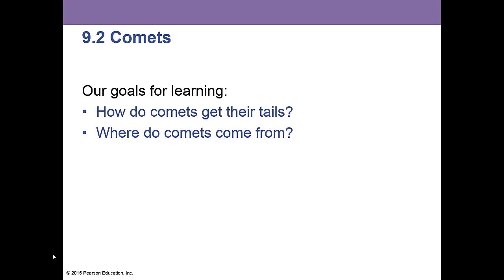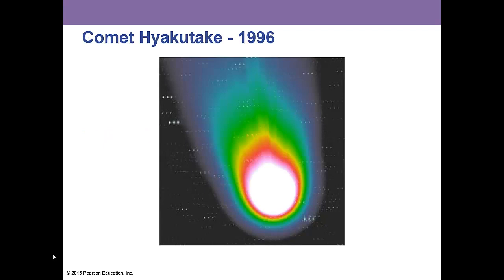Comets — my favorite topic. How do comets get their tails, and where do comets come from? Here is Comet Hyakutake in 1996. This is a picture I took as a 19-year-old sophomore in college at Missouri State University, from a wide-field telescope at Kitt Peak National Observatory in Arizona.